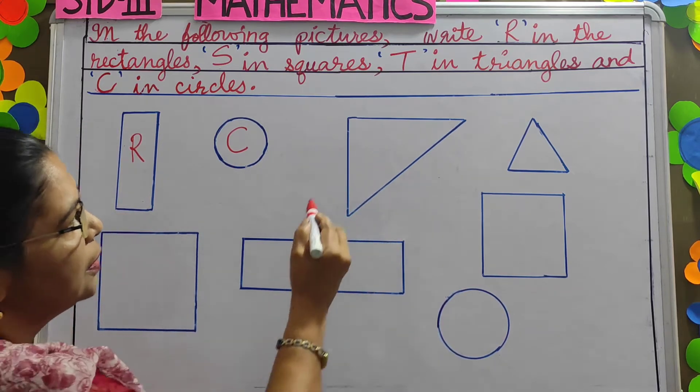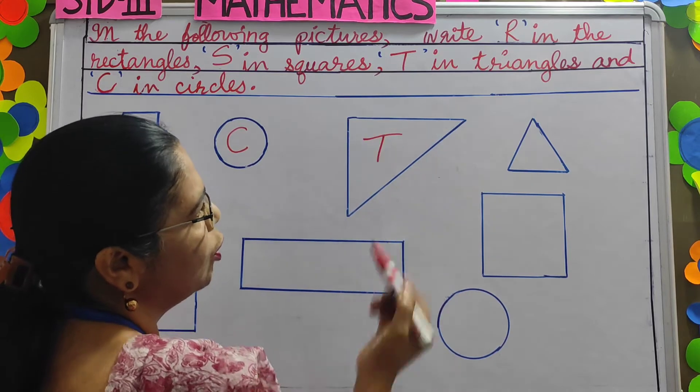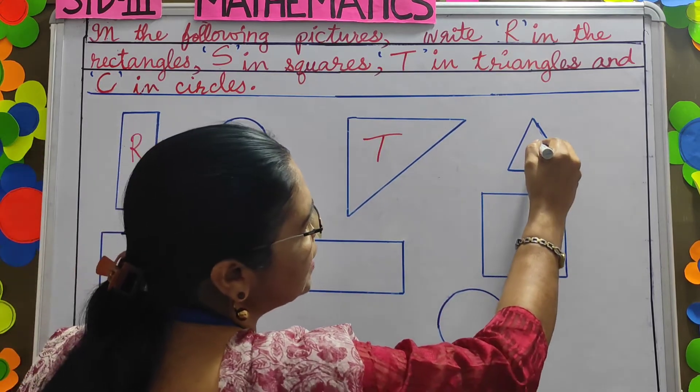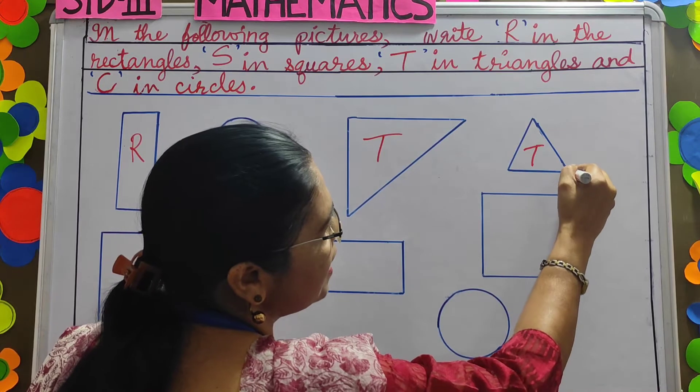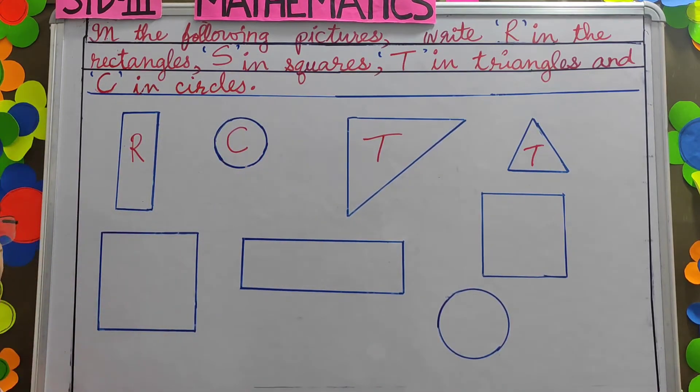This children, triangle. It has three sides and three corners. This is also a triangle, three sides and three vertices. This children, it is a square. Four equal sides.